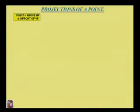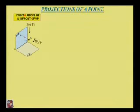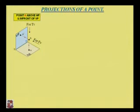Now we look at the projection of a point in different quadrants. The first condition: point A is above the HP and in front of the VP. This is a pictorial view of the condition for the point A when it is situated above the HP and in front of the VP.